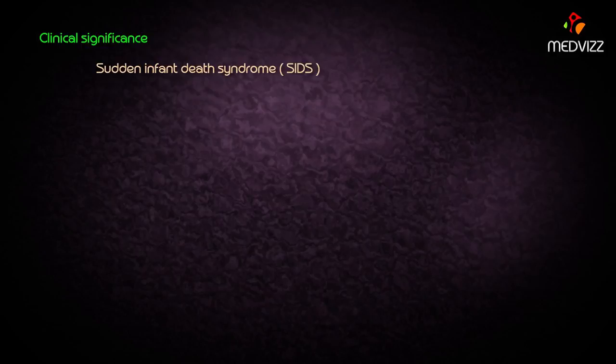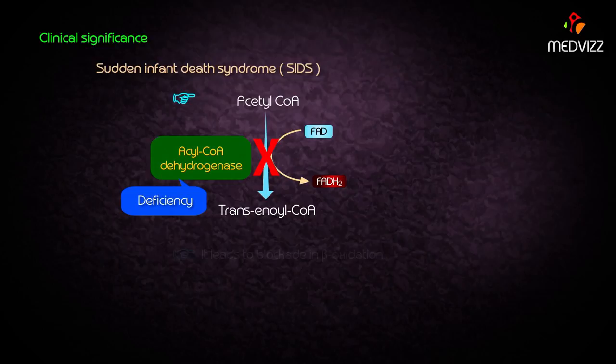Sudden infant death syndrome (SIDS) is mainly due to deficiency of medium chain acyl CoA dehydrogenase enzyme, which leads to a blockade in beta oxidation resulting in sudden death in infants. This concludes the overall clinical picture of beta oxidation of fatty acids.